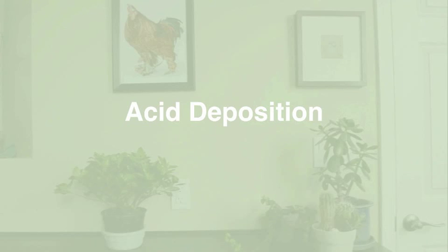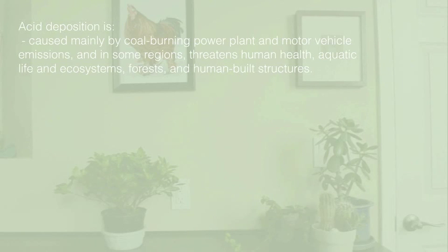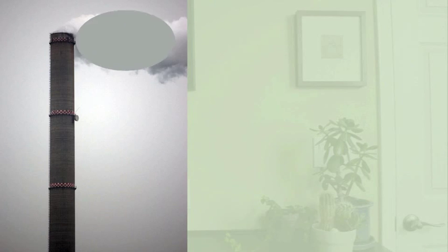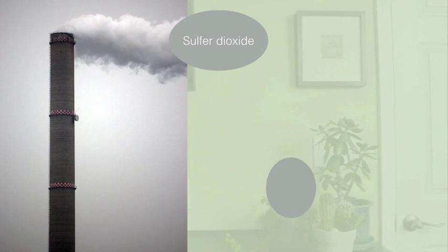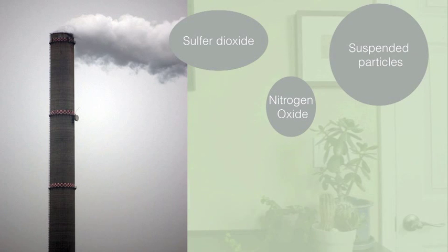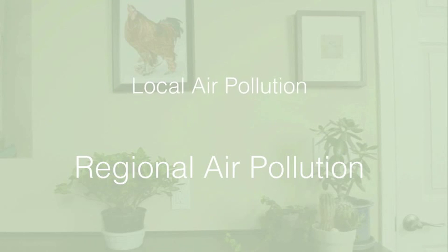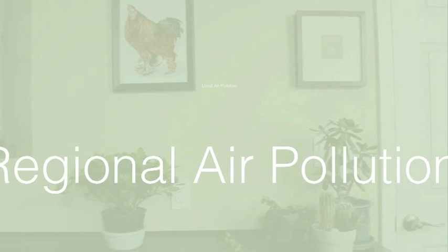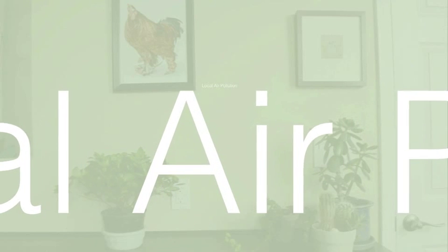What is acid deposition? Acid deposition is caused mainly by coal-burning power plants and motor vehicle emissions. Industrial plants in developed countries use tall smokestacks to emit sulfur dioxide, suspended particles, and nitrogen oxides high into the atmosphere where wind can mix, dilute, and disperse them. These tall smokestacks reduce local air pollution but can increase regional air pollution downwind. The primary pollutants, sulfur dioxide and nitrogen oxides, emitted high into the troposphere may be transported as far as 1,000 kilometers by prevailing winds.